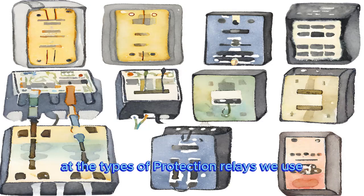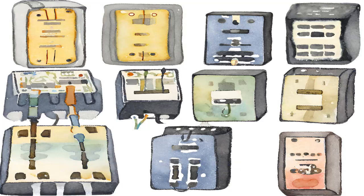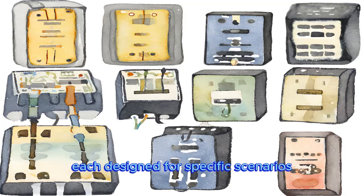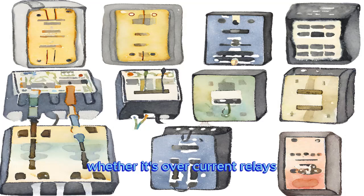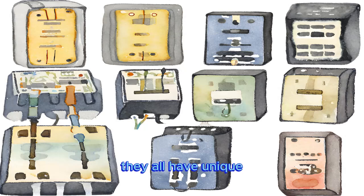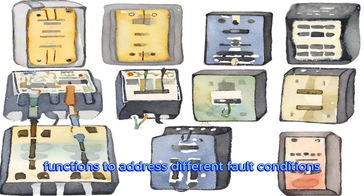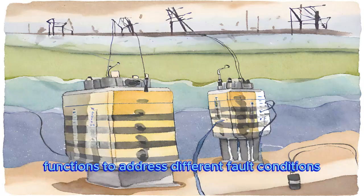Now let's take a closer look at the types of protection relays we use. They come in various flavors, each designed for specific scenarios. Whether it's overcurrent relays, differential relays, or distance relays, they all have unique functions to address different fault conditions.